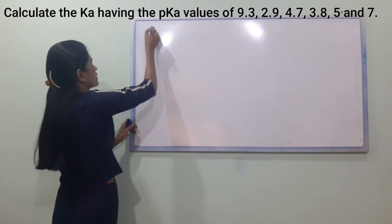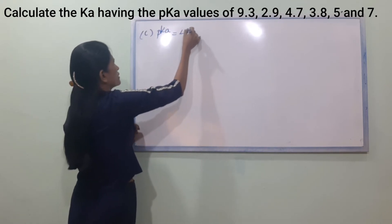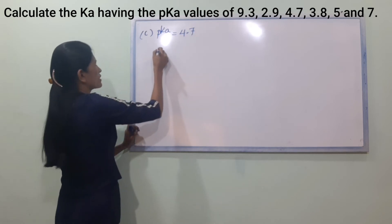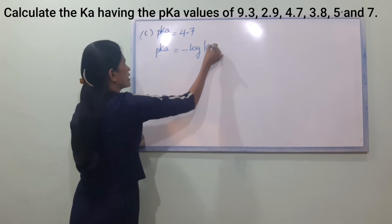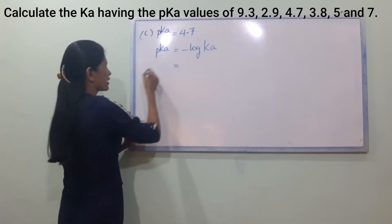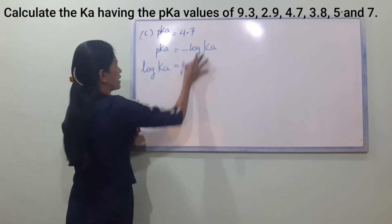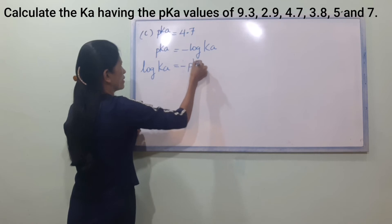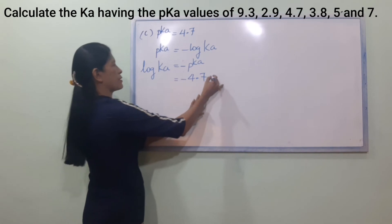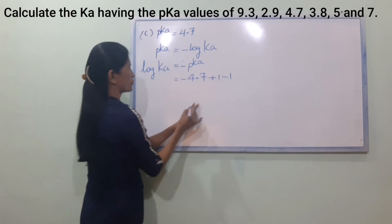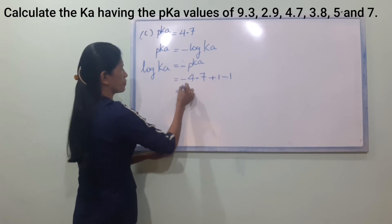Number C: PKA is equal to 4.7. So log Ka is equal to minus 4.7.